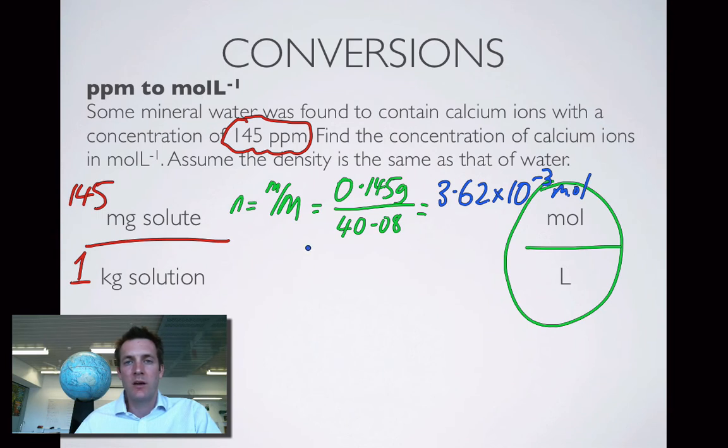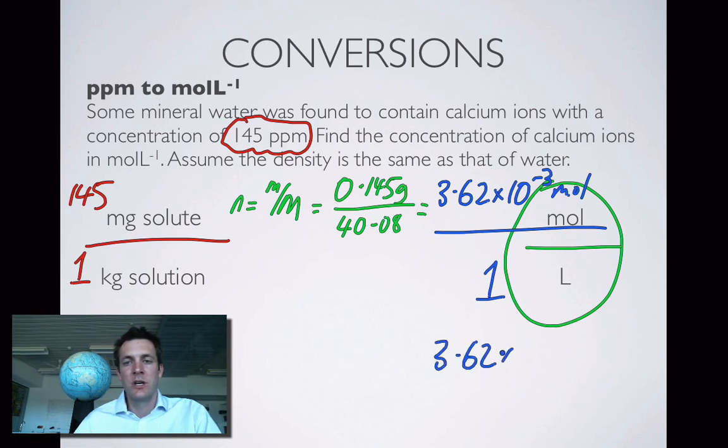Water weighs 1 gram for every milliliter, or in other words 1 kilogram for every liter. So I know that 1 kilogram is equal to 1 liter. And if I divide 3.62 times 10 to the minus 3 divided by 1, well of course I find that that is 3.62 times 10 to the minus 3 moles per liter.